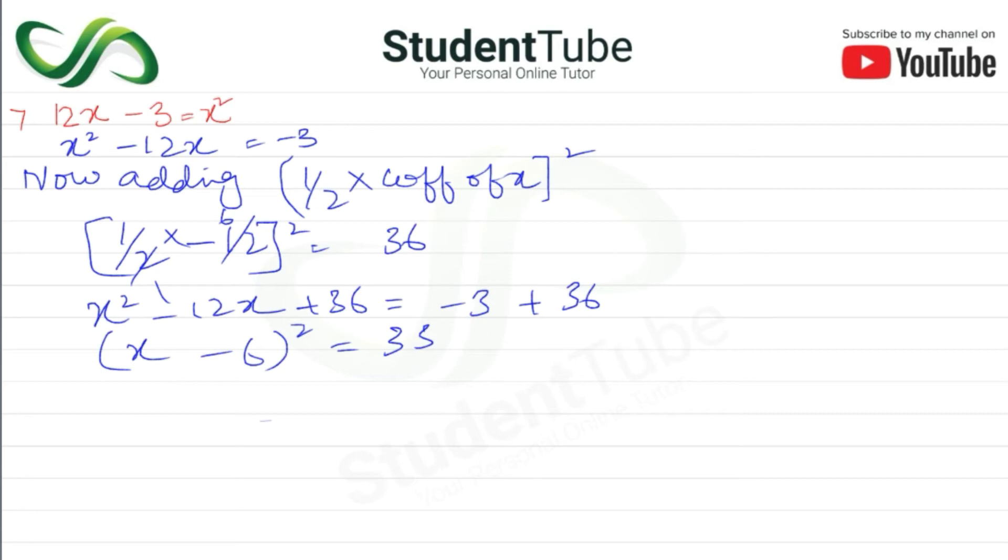Extracting square root from both sides, we get x - 6 = ±√33, or we can write it as two separate equations.